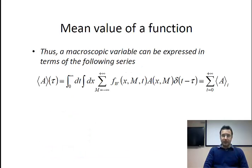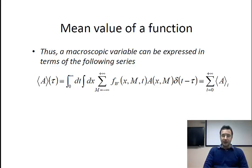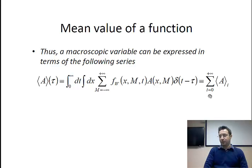The Liouville-Neumann series is defined as follows: you define the zero-th term of the series, then every n-th term of the series in terms of the kernel, which is defined in terms of the original kernel in the Fredholm integral equation. We can also express macroscopic variables in terms of the Liouville-Neumann series. Without going through all mathematical details, whatever macroscopic variable you take, it can be written as this series, and we can calculate the terms because we know how to compute a Liouville-Neumann series.